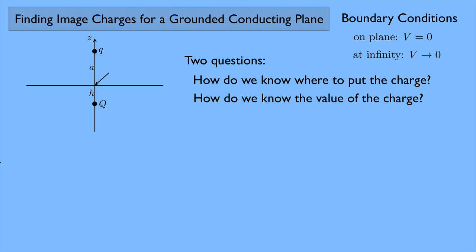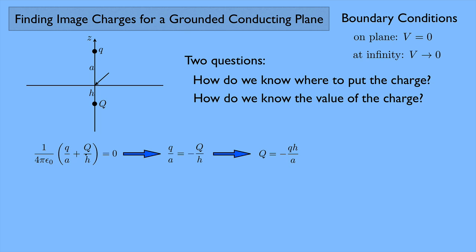Let's look at the potential at the origin. The potential there is 1 over 4π epsilon-naught, with two contributions: from the small charge q at distance a from the origin, plus the potential due to the large Q at distance h from the origin. That has to equal zero since V equals zero on the plane. We can solve this for Q, but it still contains h, so we need another equation.